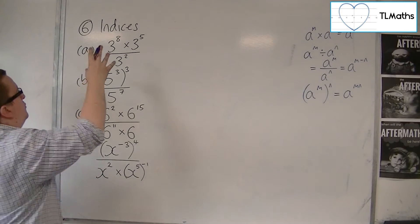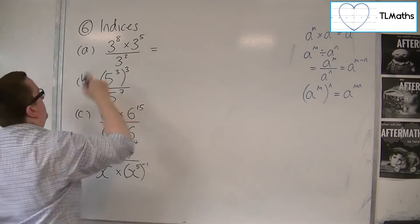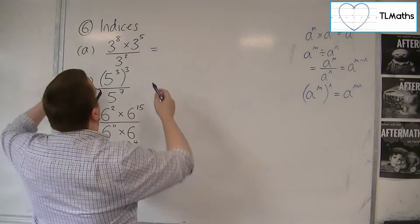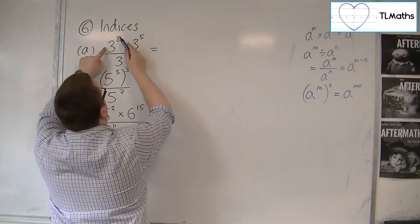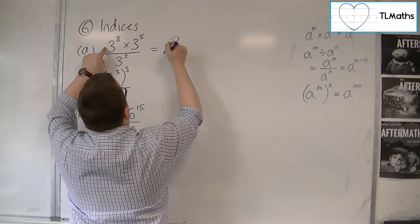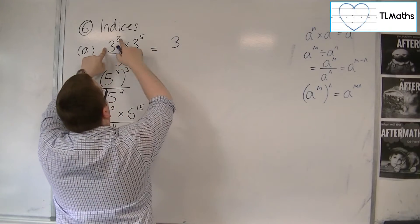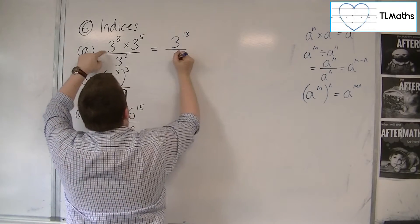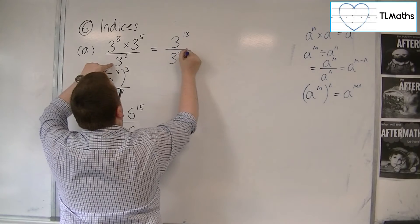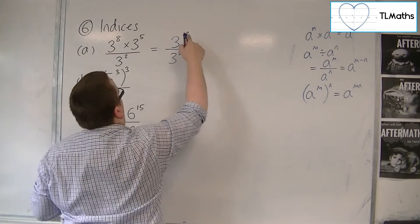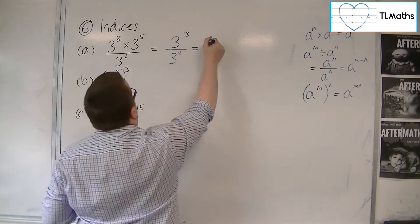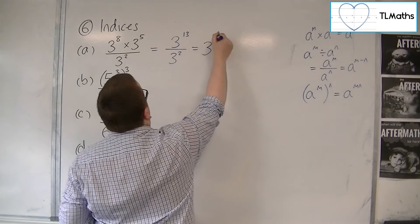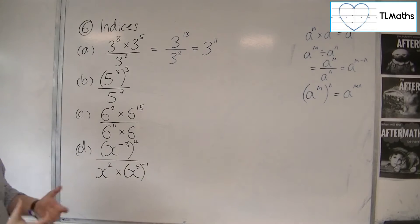We'll start with 3^8 × 3^5 ÷ 3^2. Because you're multiplying with the same base number, the indices get added together. In the numerator, we have 3^8 × 3^5, which is 3^13. We're dividing that by 3^2, so 3^13 ÷ 3^2 is 3^(13-2), which equals 3^11.